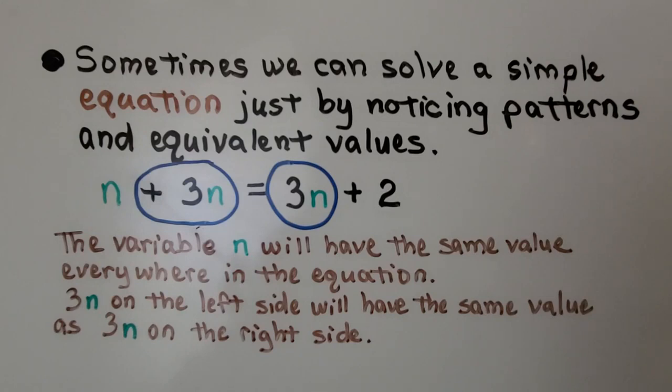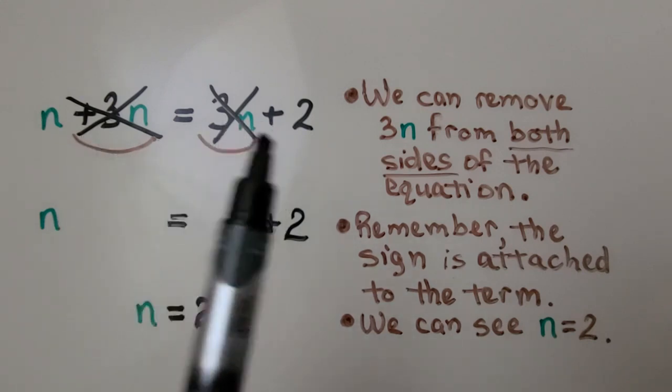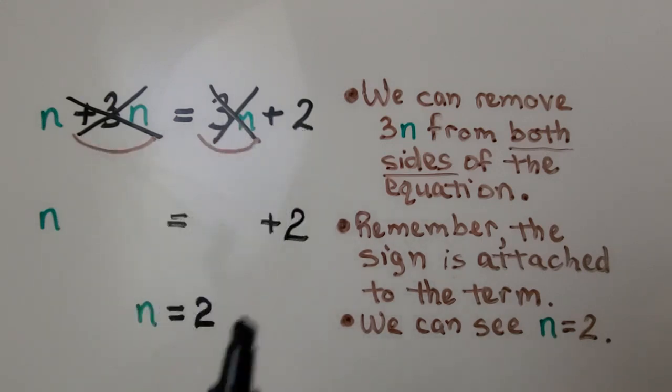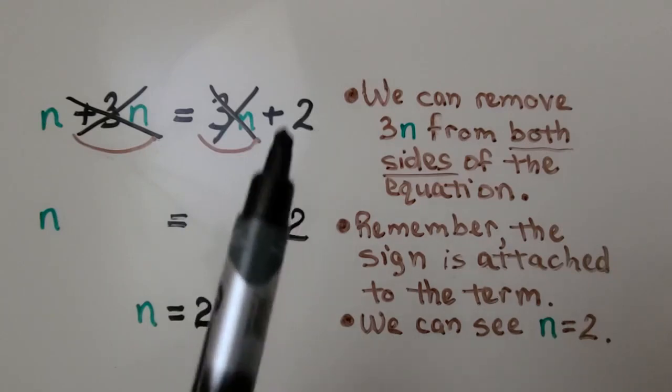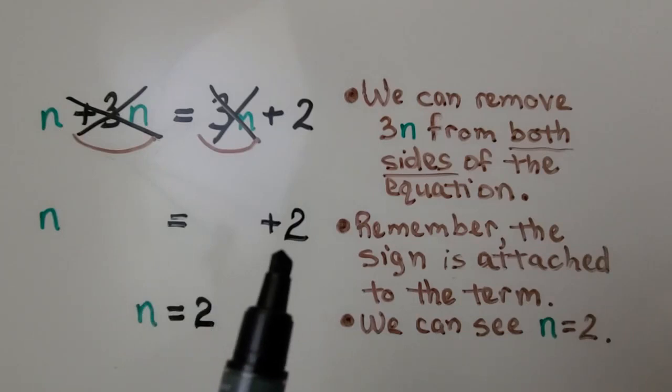Here we have n plus 3n is equal to 3n plus 2. The variable n will have the same value everywhere in the equation. 3n on the left side will have the same value as 3n on the right side. We can remove 3n from both sides of the equation. And remember the sign is attached to the term to its right. So we have n is equal to a positive 2.